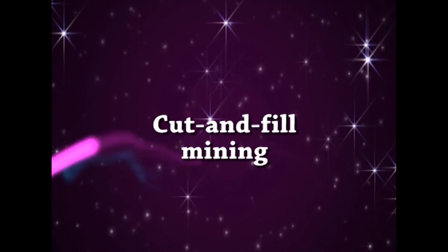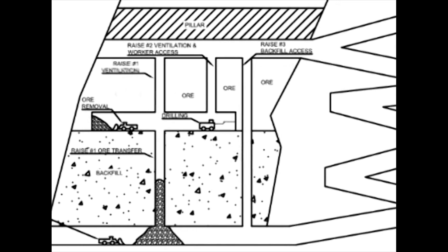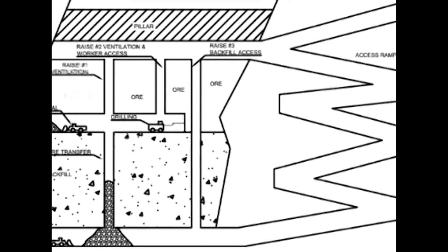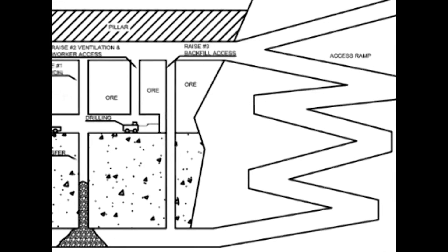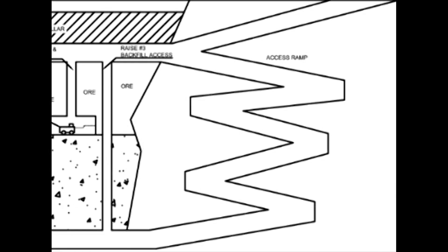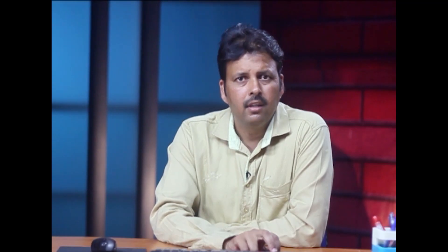Cut and fill mining is suitable for a steeply dipping mineral deposit contained in a rock mass with good to moderate stability. It removes the ore in horizontal slices starting from a bottom cut and advances upwards, allowing the stope boundaries to be adjusted to follow irregular mineralization. This permits high-grade sections to be mined selectively, leaving low-grade ore in place.